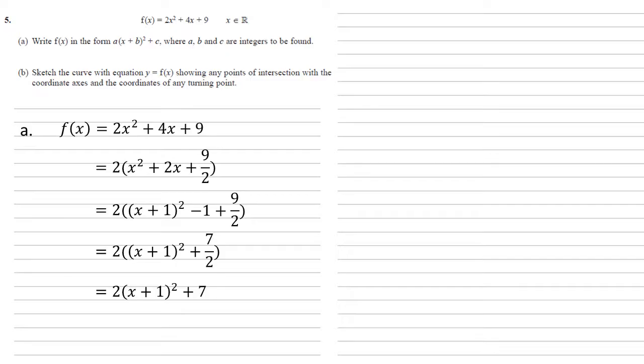For part b we want to sketch the curve with equation y = f(x) showing any points of intersection with the coordinate axes and the coordinates of any turning point. The first thing to do is look for any intersections with the y-axis, so we're going to find f(0).